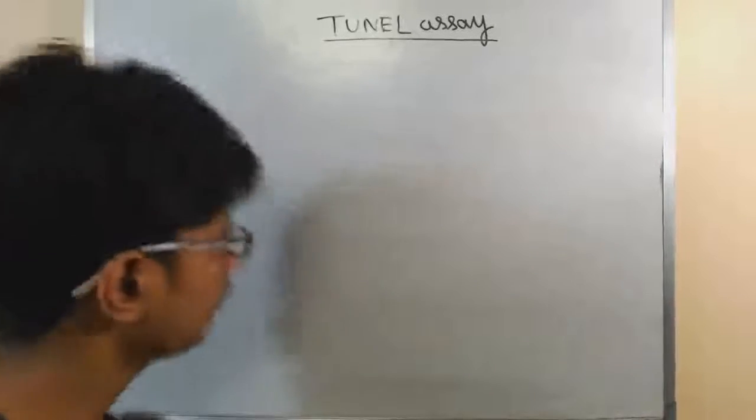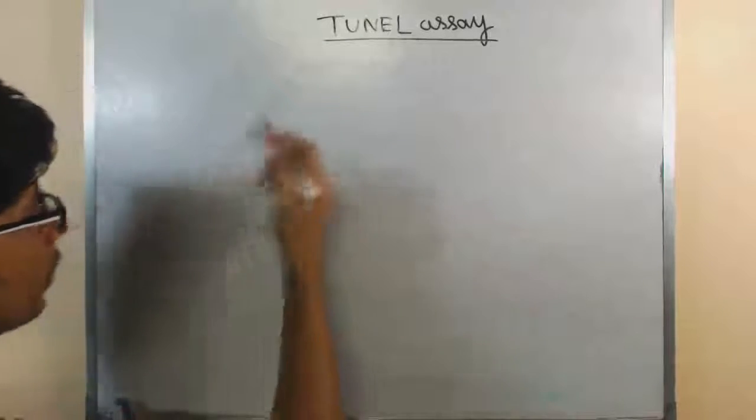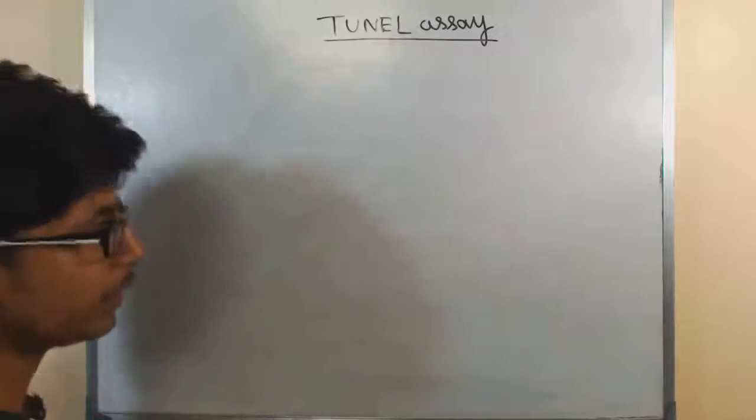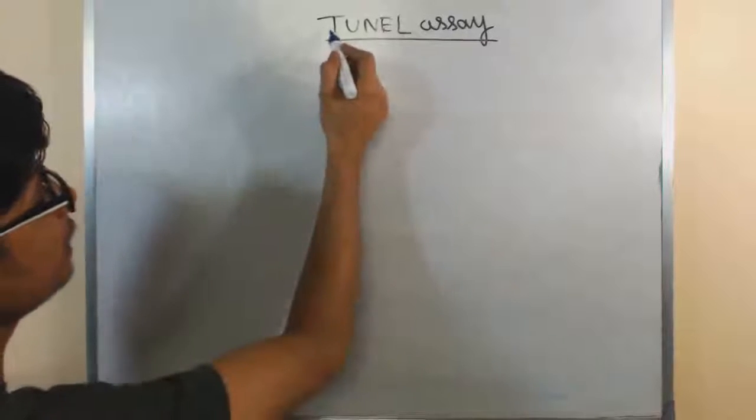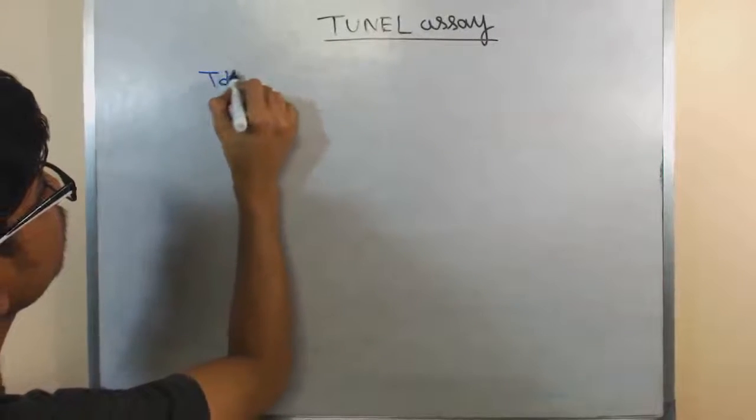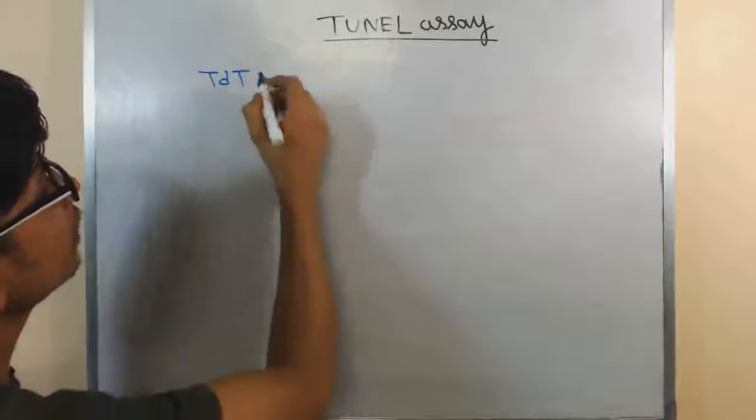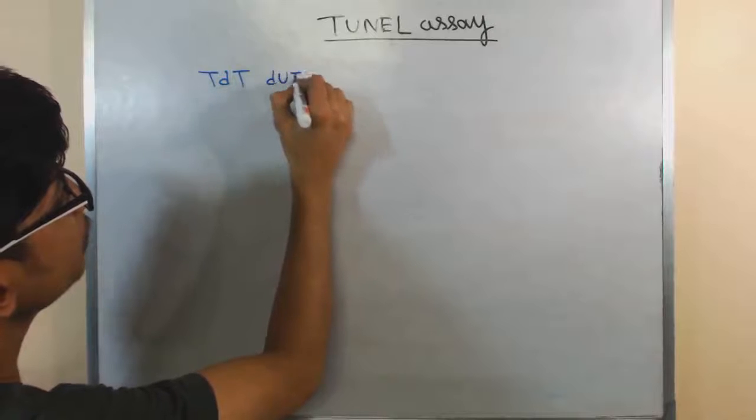It is nothing to do with tunnel. The term comes like that so we can memorize it properly. The full form of this assay, though it is not important, but I'm telling you because once you know the full form you will know the process. T stands for TDT, terminal deoxynucleotidyl transferase, U stands for dUTP.